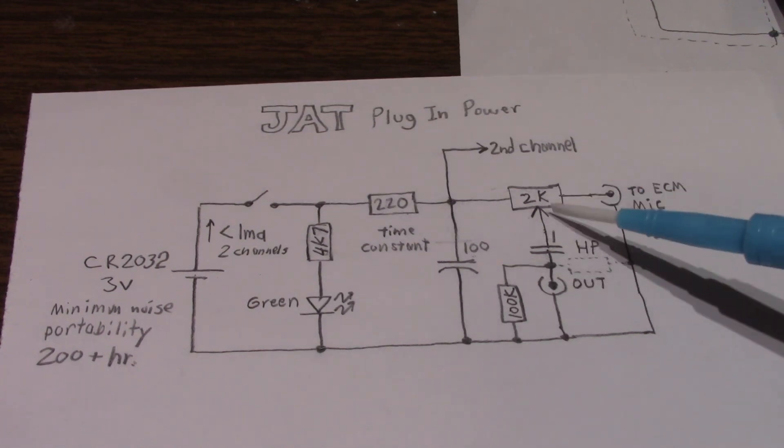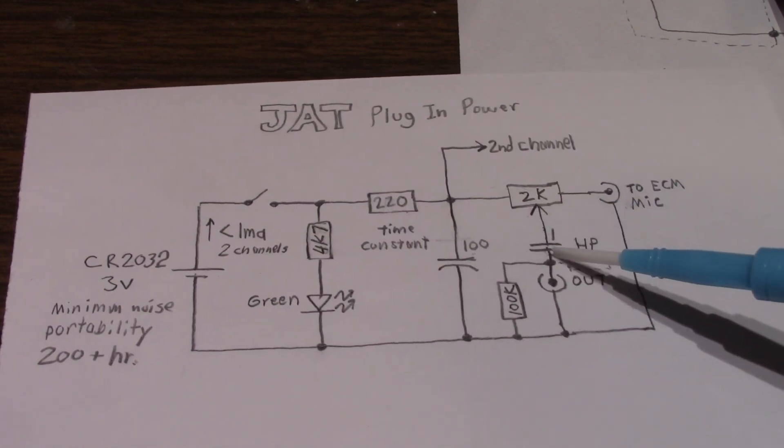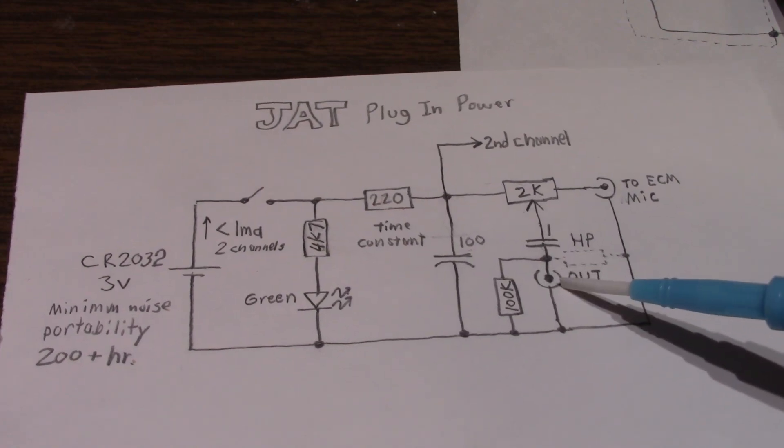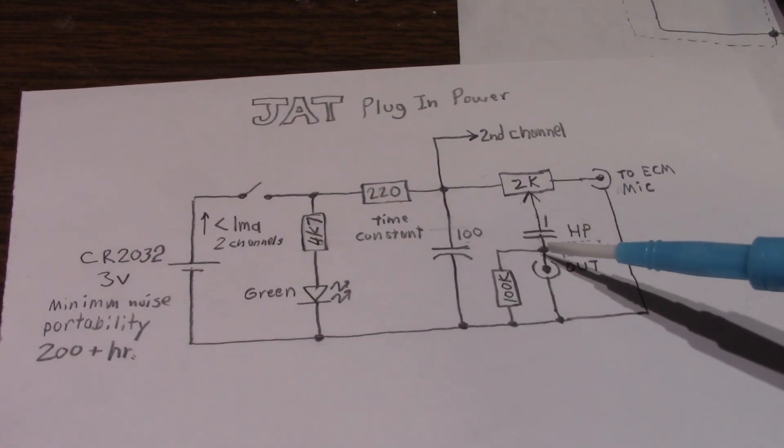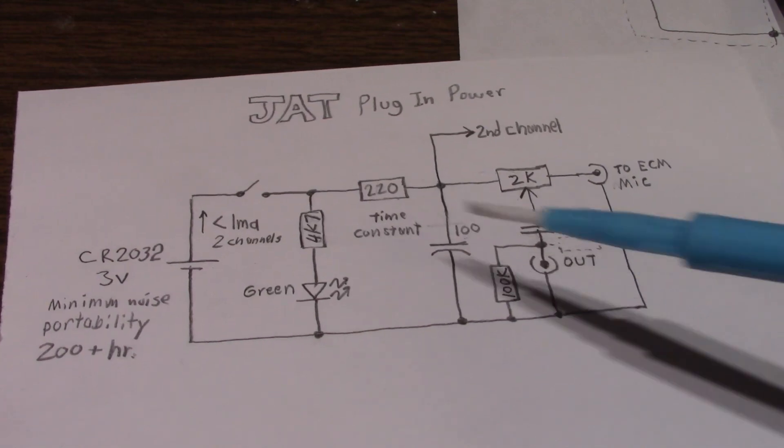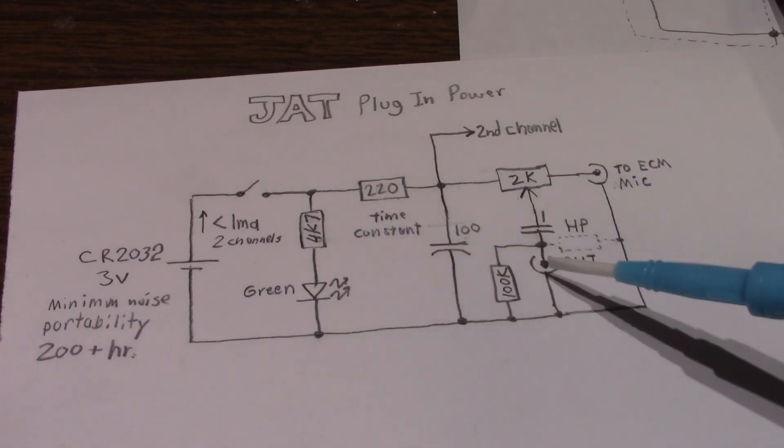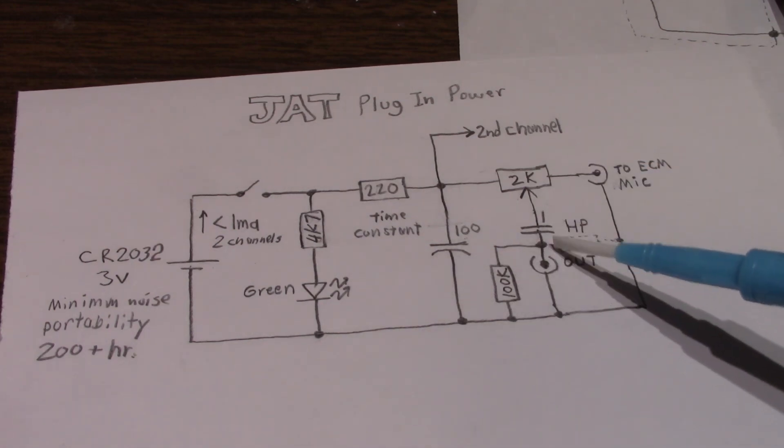So connected to the wiper arm would be a capacitor to remove the DC component. And that goes to the output. Now, this resistor here just shunts away voltage that might show here. If nothing's plugged in and you power this up, then you go to plug something in and you get a loud pop. Well, that'll shunt away that DC component.